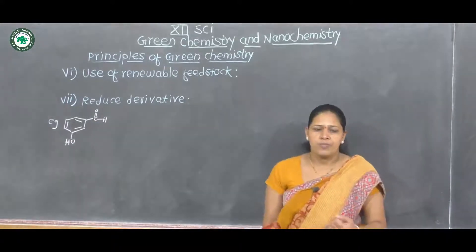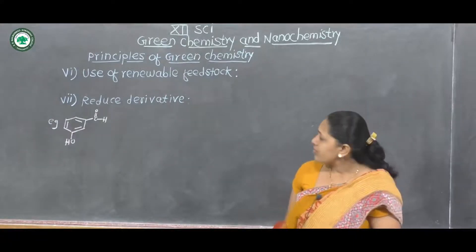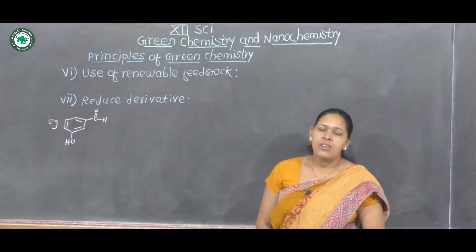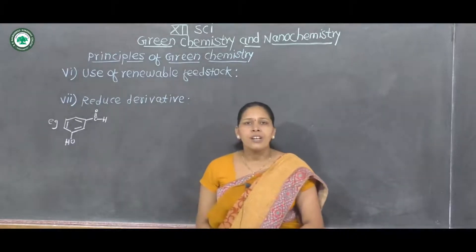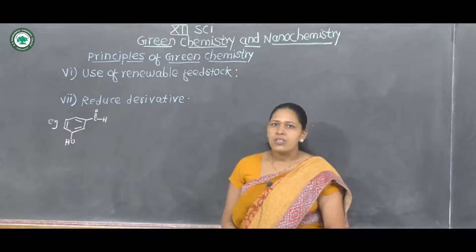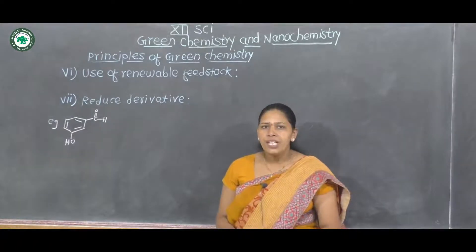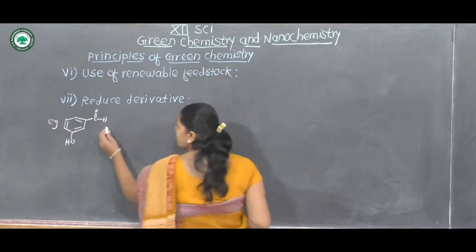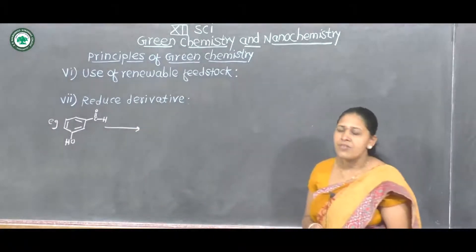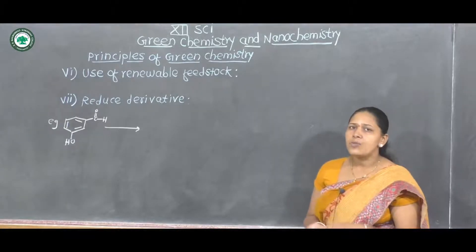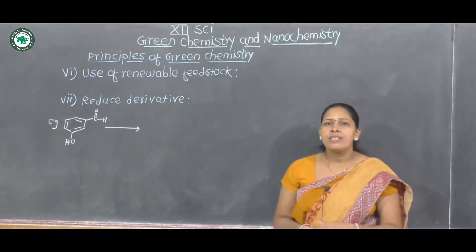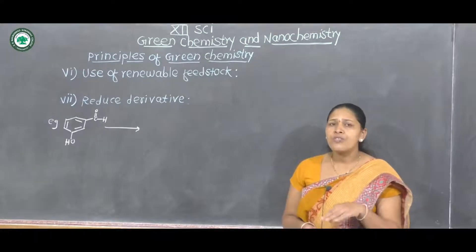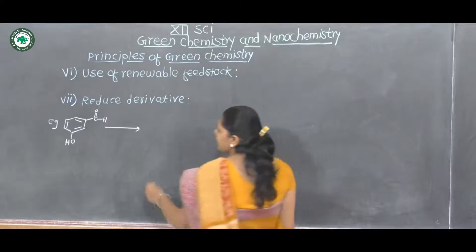Metahydroxybenzaldehyde consists of two functional groups. If we have to reduce only the aldehyde functional group, and we use a common oxidizing agent, then both functional groups are oxidized. Therefore we have to protect the hydroxyl group using some protecting reagent. This protection and deprotection of the hydroxyl group represent unnecessary steps that should be avoided — another option for this chemical synthesis should be developed.